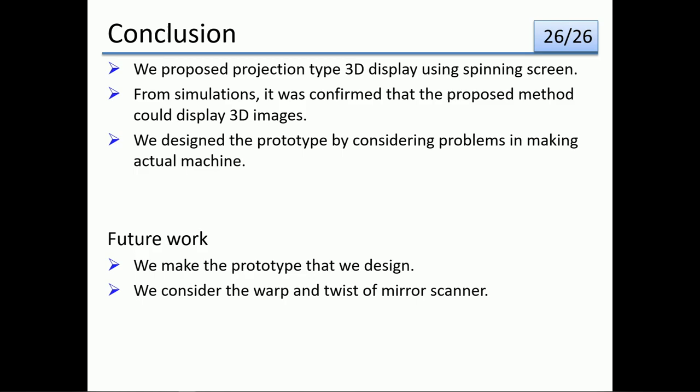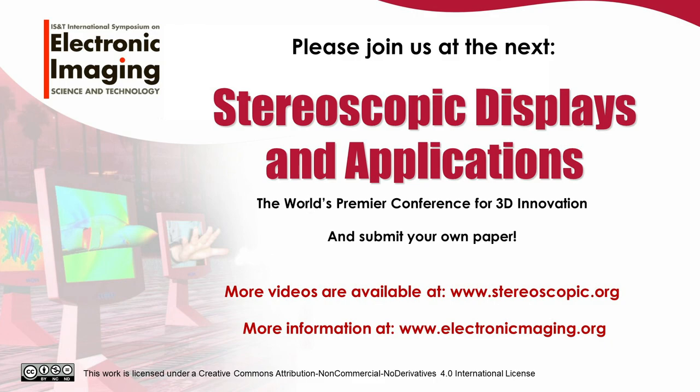In conclusion, we propose a projection type 3D display using a spinning screen. From simulations, it was confirmed that the proposed method could display 3D images. We designed a prototype by considering the problems in making the actual machine. In future work, we will build the prototype that we designed and address the warp and twist of the mirror scanner. Thank you for listening.